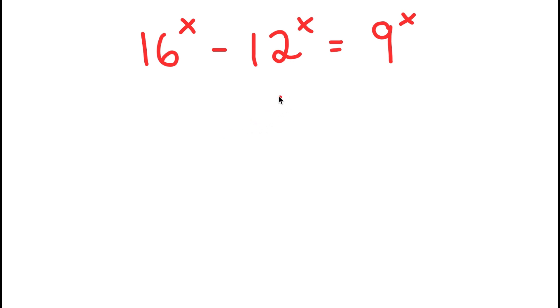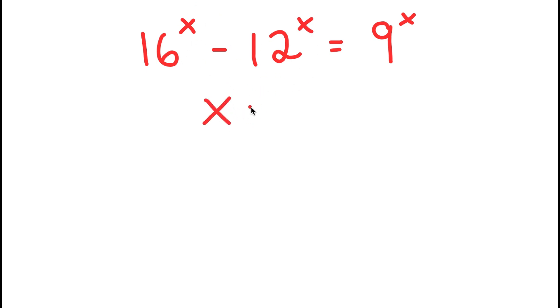In this equation, I have 16 to the power of x minus 12 to the power of x is equal to 9 to the power of x. My only variable in this equation is x, so that's what I want to be solving for.